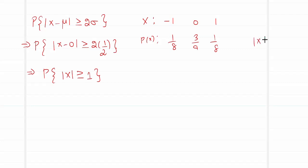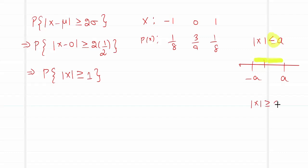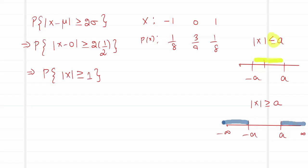Let us analyze what |X| ≥ 1 means on the number line. When |X| ≤ a, the value of X varies between −a and +a. When |X| ≥ a, the value lies outside that range — specifically from a to +infinity on the positive side and from minus a to minus infinity on the negative side. So |X| ≥ 1 means X moves towards plus and minus infinity from 1 and minus 1 respectively.